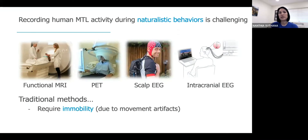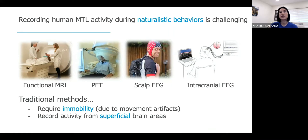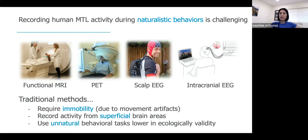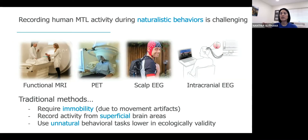There are also movement artifacts. So these traditional methods require immobility, and they often record from superficial brain areas, such as in the case of scalp EEG. Because of all this, the tasks that cognitive neuroscientists design have to work in this kind of environment. They tend to be somewhat unnatural tasks — simple images on a screen, or words presented on a two-dimensional screen — far removed from the naturalistic experience we want to understand in terms of neural mechanisms.